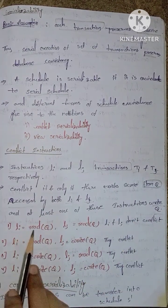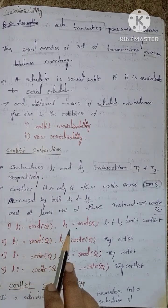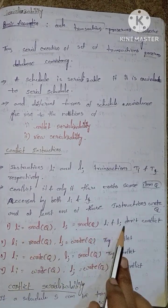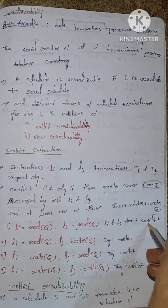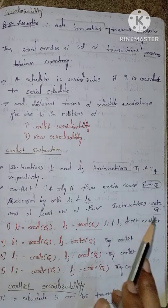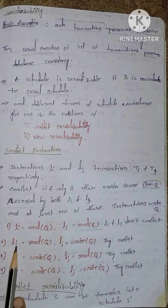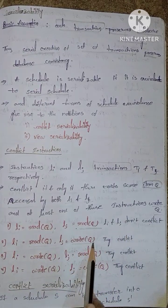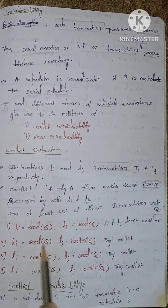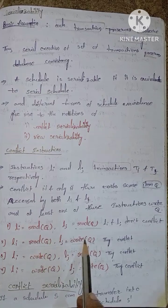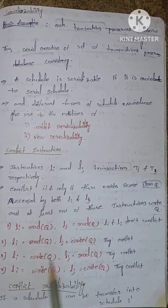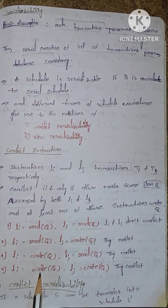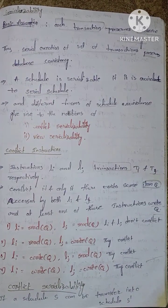If Li equals read(Q) and Lj equals read(Q), then Li and Lj don't conflict. Read-read does not conflict. Read-write and write-write do conflict.